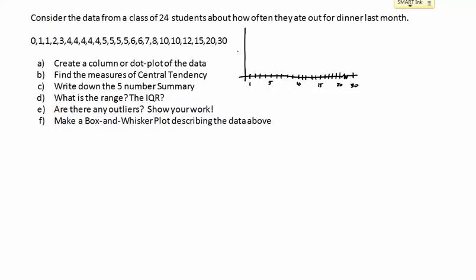A dot plot means you put one dot for each data point. For zero I put one dot; for one I've got two ones so I put down two dots; one dot for two; one for three; for four I've got five dots — looks like a lot of people ate out about once a week. Then four fives, two sixes, a seven, an eight, two tens, a 12, a 15, a 20, and a 30. That's my dot plot.